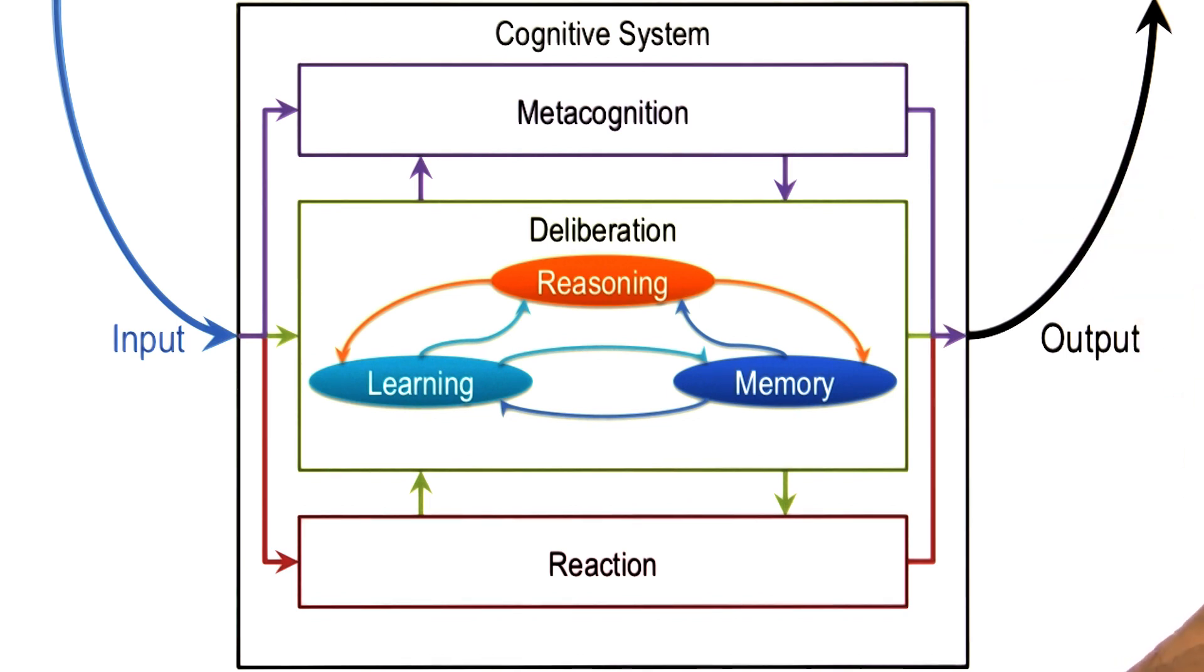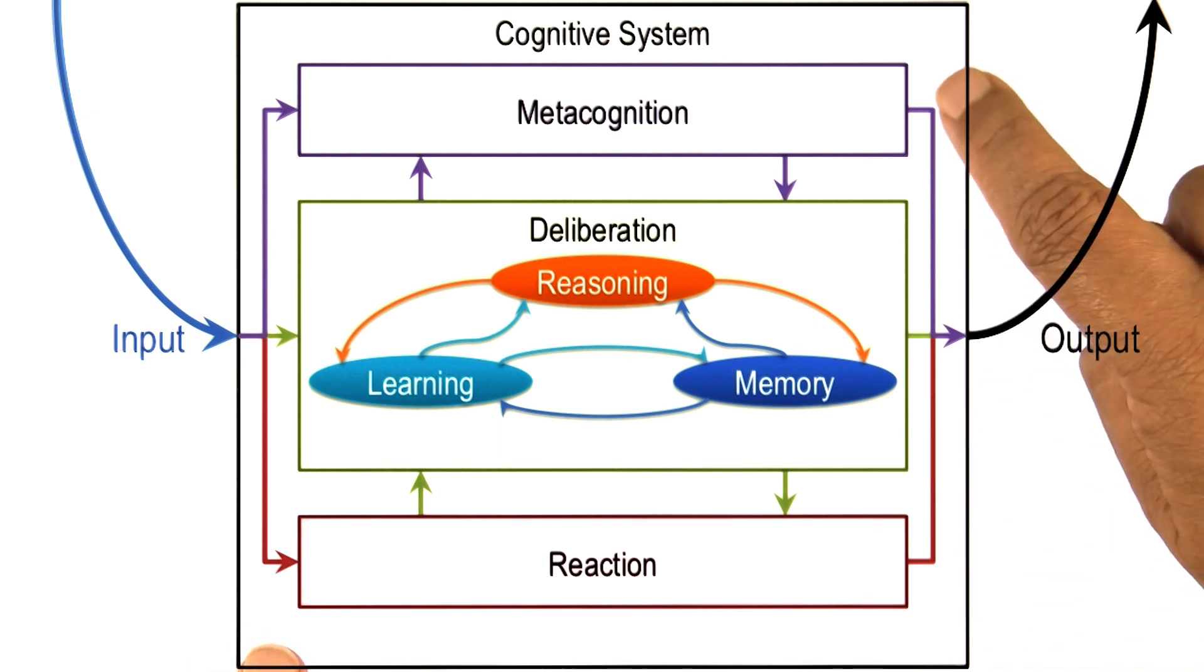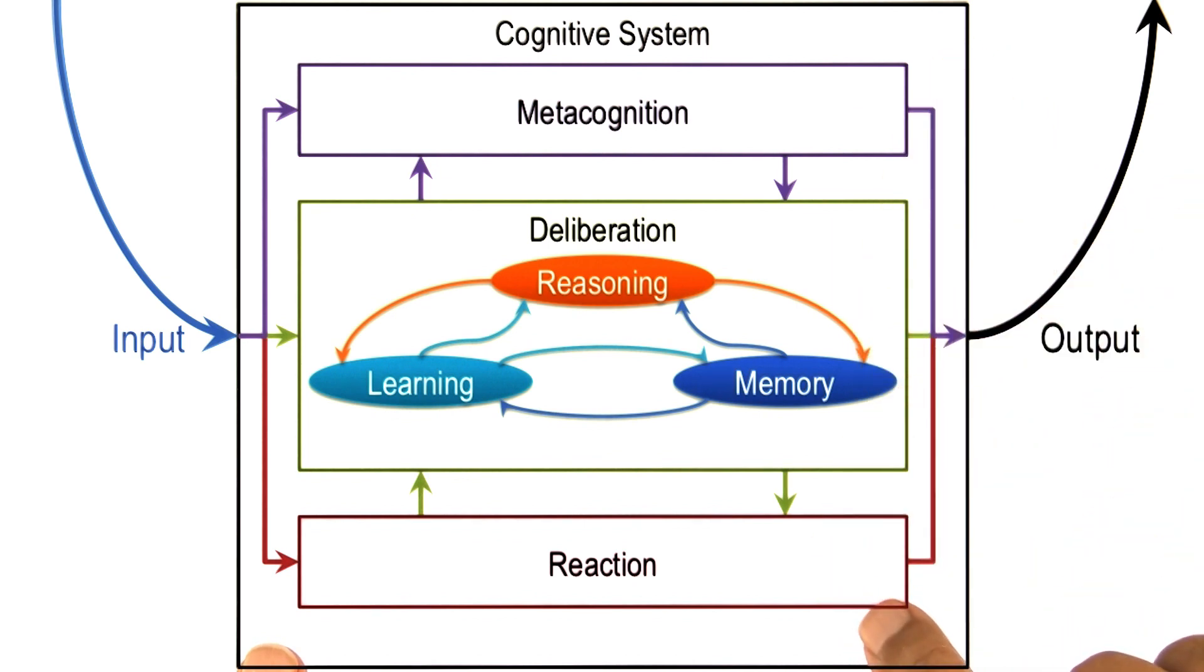So now I have this three layered architecture: reaction, deliberation, metacognition. Note that we have defined intelligence in a way. Intelligence here is about mapping percepts in the world into actions in the world. Intelligence is about selecting the right kind of action, given a particular state of the world. But there are many different ways in which we can map the percepts into actions: purely reactive, deliberative, or also entailing metacognition on the deliberation and the reaction.